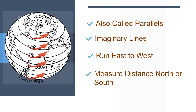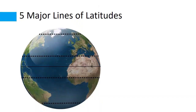Most importantly, the equator is the most well known parallel. I am talking about 5 major lines of latitudes. This middle line is called the Equator. It divides the earth into two parts: Northern Hemisphere and Southern Hemisphere.